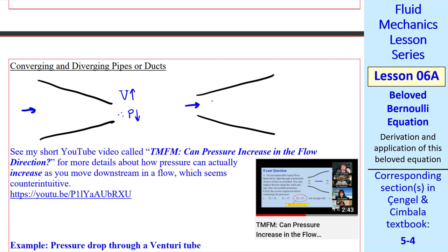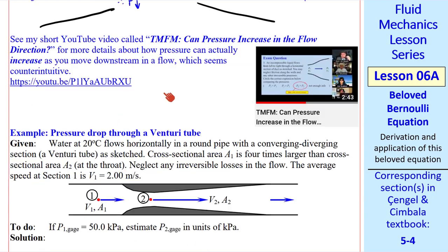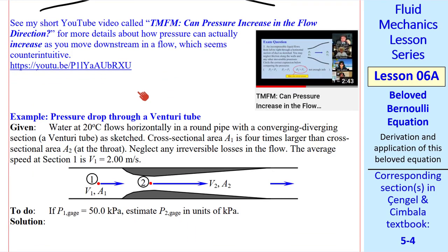If we have the opposite case, a diverging duct, the speed decreases to conserve mass. Therefore, P must increase. But how can pressure increase in the direction of the flow? I talk about this in a little more detail in this short two-minute video. I'll show a clip from that here.